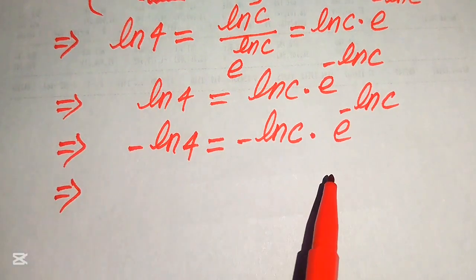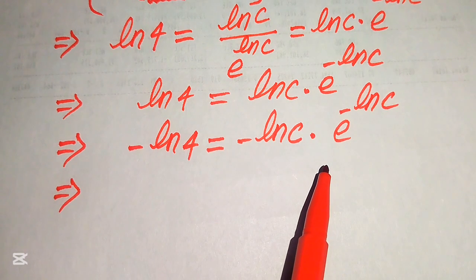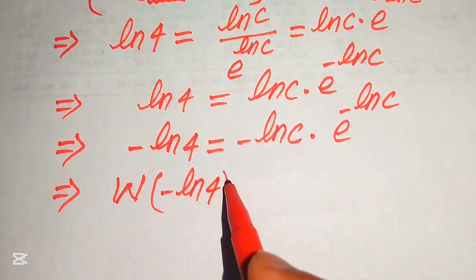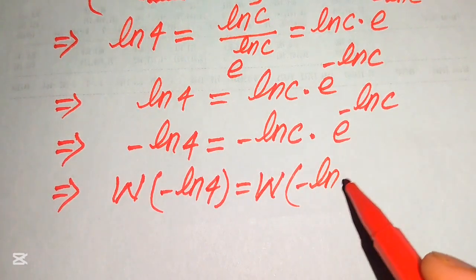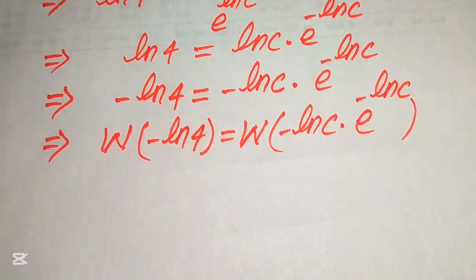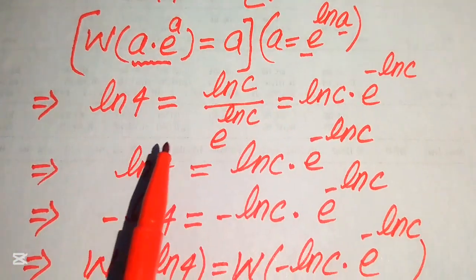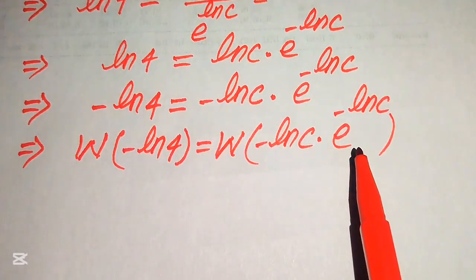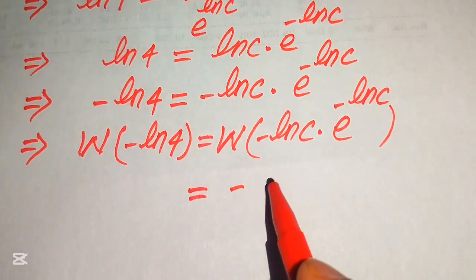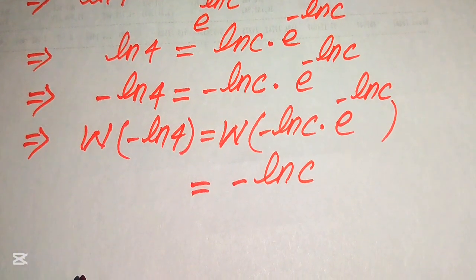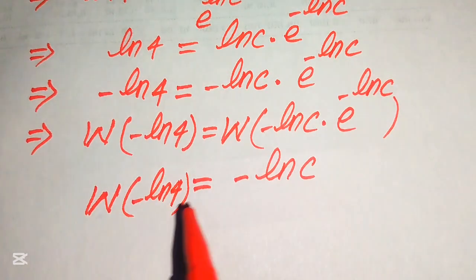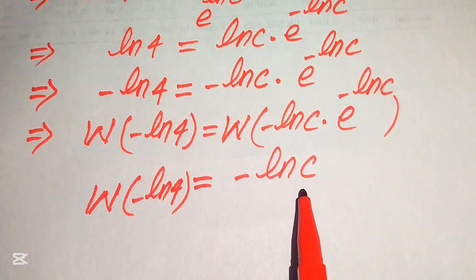Now we apply the Lambert W function on both sides, and it is written as W of (minus log 4) is equals to W of (minus log of c multiplied by e to the power of minus log of c). According to the definition of the Lambert W function, the output of this function on the right hand side is equals to minus log c. So we find the value of c by eliminating the minus log from here.